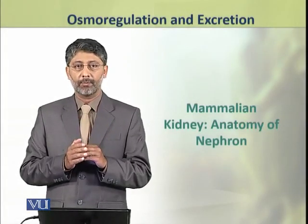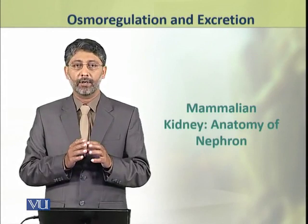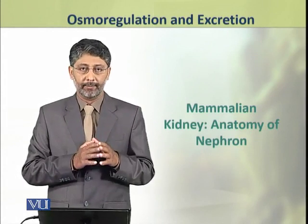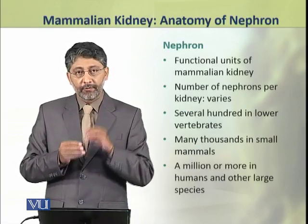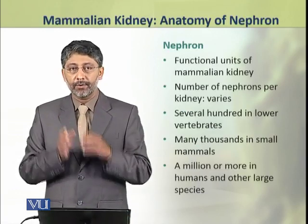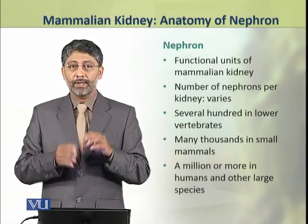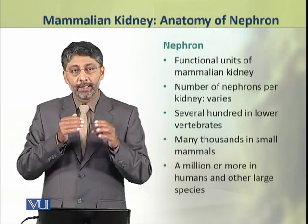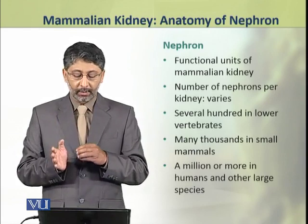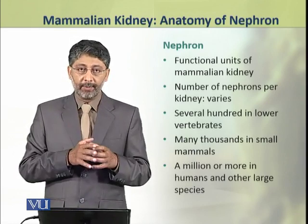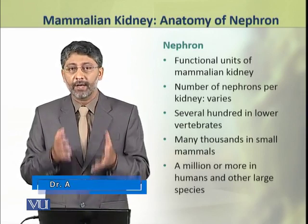Dear students, in this topic we shall discuss the anatomy of the nephron of the mammalian kidney. Nephrons are the functional units of the kidney. The number of nephrons in the kidneys of vertebrates varies. In lower vertebrates, each kidney has only several hundred nephrons.